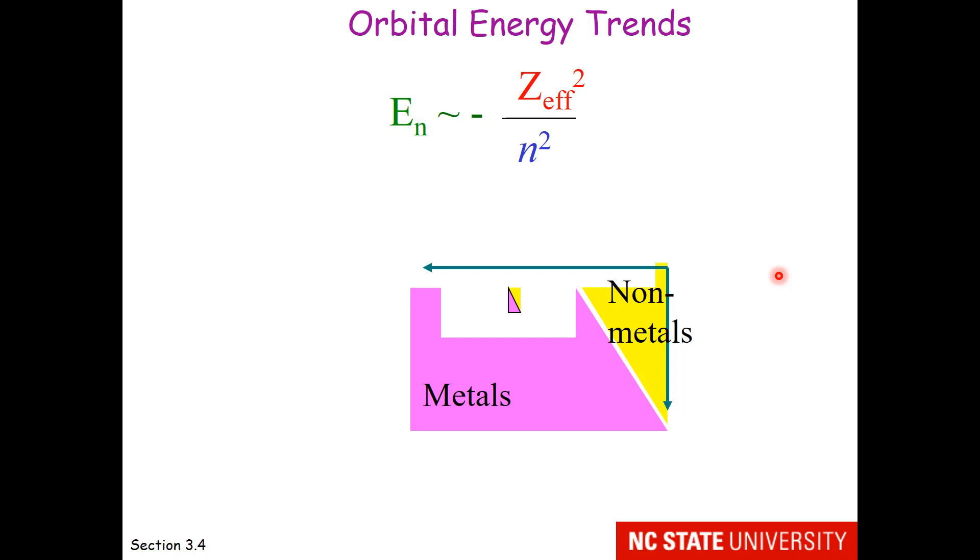So in summary for orbital energy trends, the most negative, which means the lowest energy orbitals, are found in the upper right of the periodic table. And the least negative, highest energy valence orbitals, that are furthest away from the nucleus, are found here in the lower left.